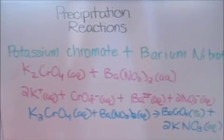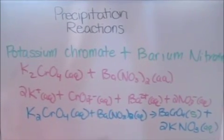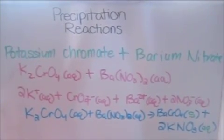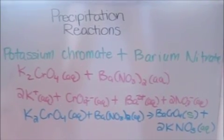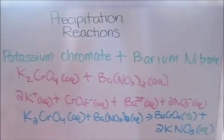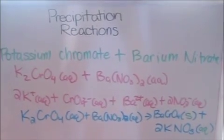So our final equation is that our potassium chromate aqueous plus our barium nitrate aqueous goes to form barium chromate solid plus potassium nitrate aqueous.